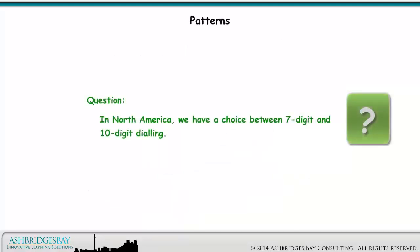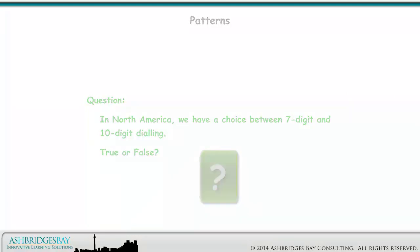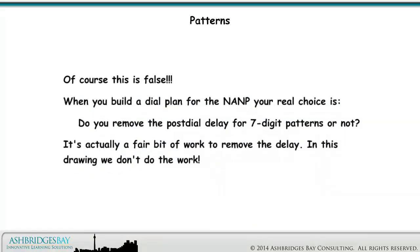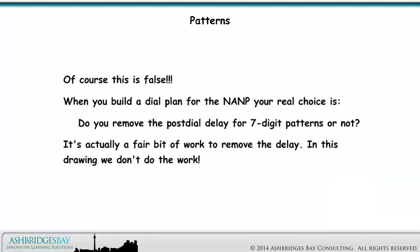Here's a question: in North America, we have a choice between 7-digit and 10-digit dialing — true or false? Of course, this is false. When you build a dial plan for the NANP, your real choice is: do you remove the post-dial delay for 7-digit patterns, or not? It's actually a fair bit of work to remove the delay. In this drawing, we don't do the work.